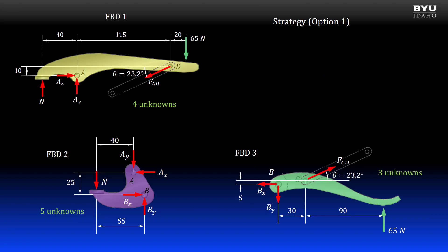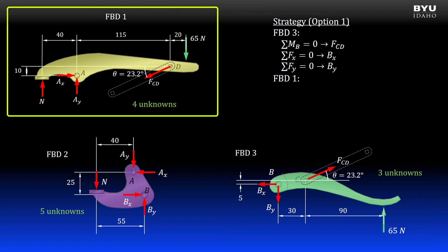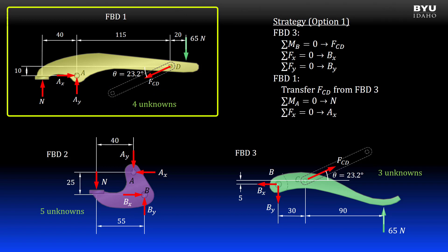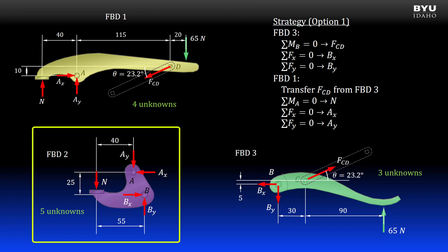One overall strategy for solving for all our unknowns is to start with free body diagram three, where I can solve for all the unknowns by summing moments at B, summing forces in X, and summing forces in Y. Then I move to free body diagram one and transfer the shared force FCD over from free body diagram three. Then I can get the remaining unknowns by summing moments at A, summing forces in the X direction, and summing forces in the Y direction. We then have all our unknowns without even using free body diagram two.